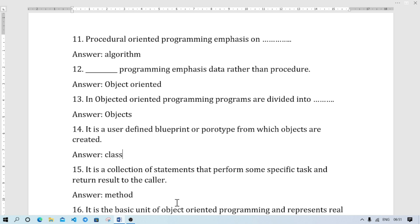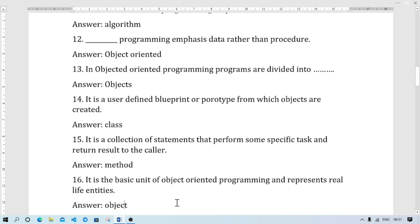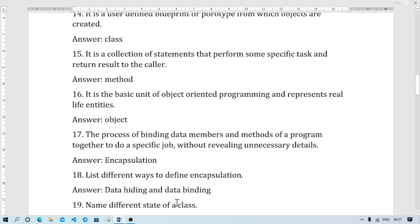Number 15: It is a collection of statements that performs specific tasks and returns result to the caller. It is method. Number 16: It is a basic unit of object-oriented programming and represents real-life entities. It is object.